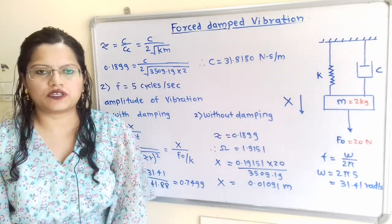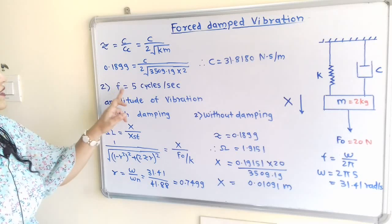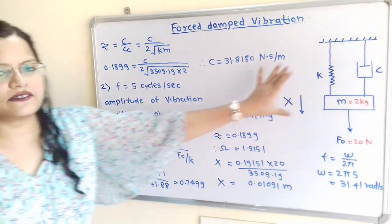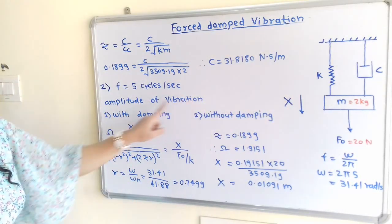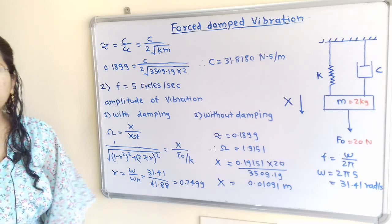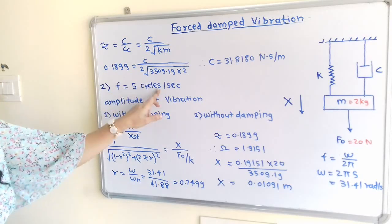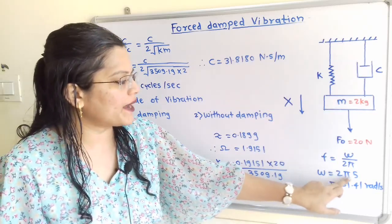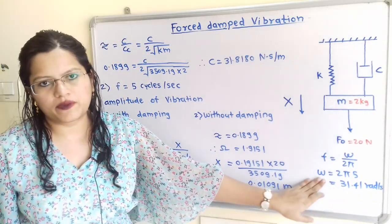This was the first part of the question. Now we move to the second part. The frequency is given as 5 cycles per second. For this frequency, when the system vibrates at 5 cycles per second, we have to find the amplitude of vibration with damping and without damping. We will find the value of ω: F = ω/2π, so ω = 2π × 5 = 31.41 radians per second.